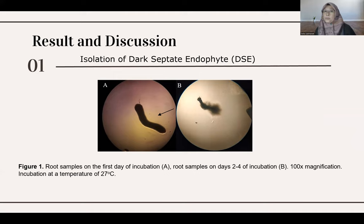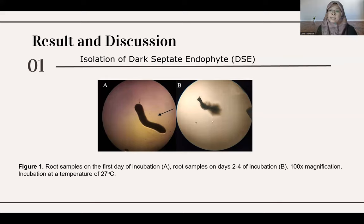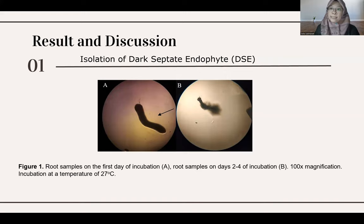For the results and discussion, we collected Dark Septa Endophyte from the root parts of the fern, Pteris vittata. We placed this root portion onto media — we used Potato Dextrose Agar — and incubated it in a box in the dark.